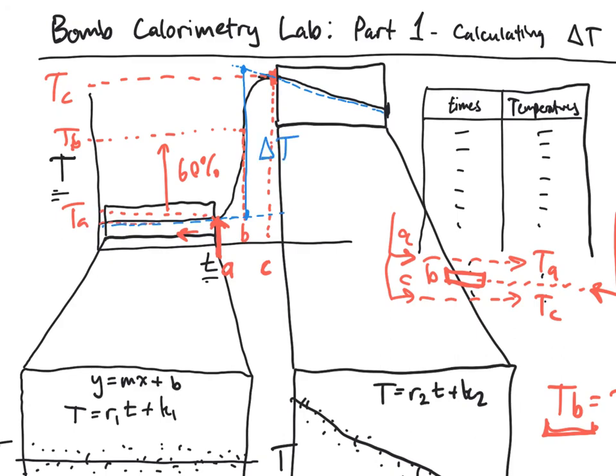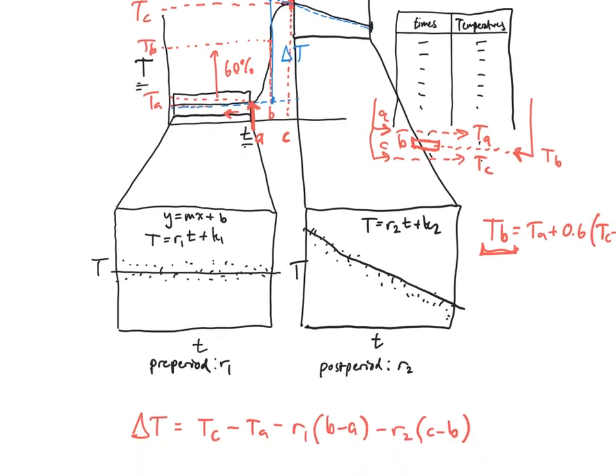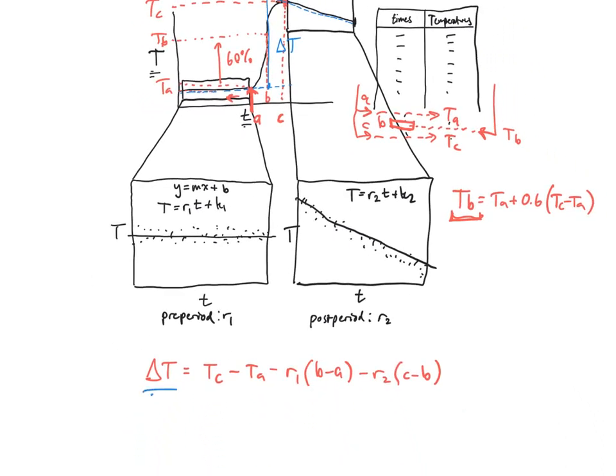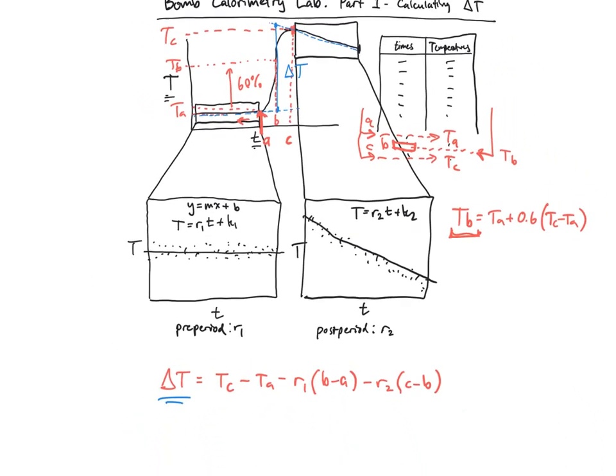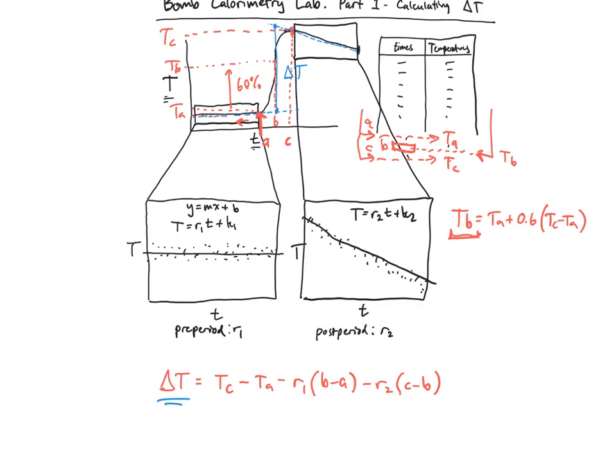So in that equation down here, that is specifically what you're doing: you're extrapolating forward from the pre-period, backwards from the post period, and calculating that change in temperature. And so keep in mind that you're going to need to do this for both samples in the lab. So you would have to do it for both benzoic acid and for naphthalene, or if you did some other material you'd have to do this analysis for those ones too.